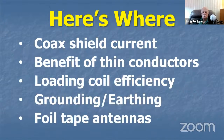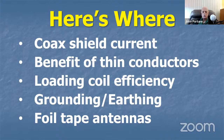Here's where it is important. It has a lot to do with coax shield current, which all hams are usually pretty familiar with, even if they haven't been bitten in the lip by their microphone because they have a poor balun up there on the antenna. But particularly, it has to do with thin conductors — aluminum and copper foil tape antennas. Skin effect also has a good bit to do with loading coil efficiency. Maybe some of you have loading coils if you run HF mobile. It plays a big role in that. Also, skin effect is an important issue when you're talking about grounding your station, or as the Brits call it, earthing your station.